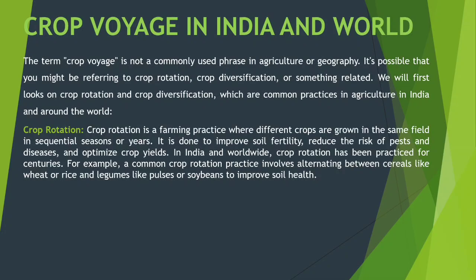Crop rotation is a farming practice where we grow different crops in the same field in sequential seasons or years. In one season we grow one crop, then in the second season another crop in the same field. We do this to improve soil fertility, reduce the risk of pests and diseases, and optimize crop yield. In India and worldwide, crop rotation has been practiced for centuries. A common practice involves alternating between cereals like wheat or rice and legumes like pulses or soybeans to improve soil health.